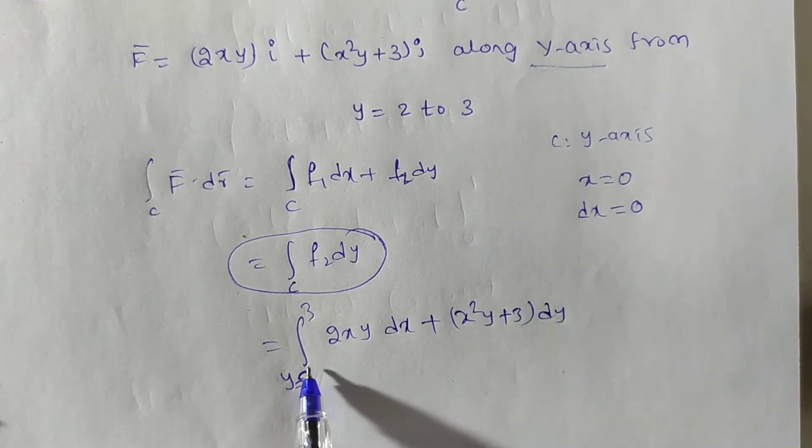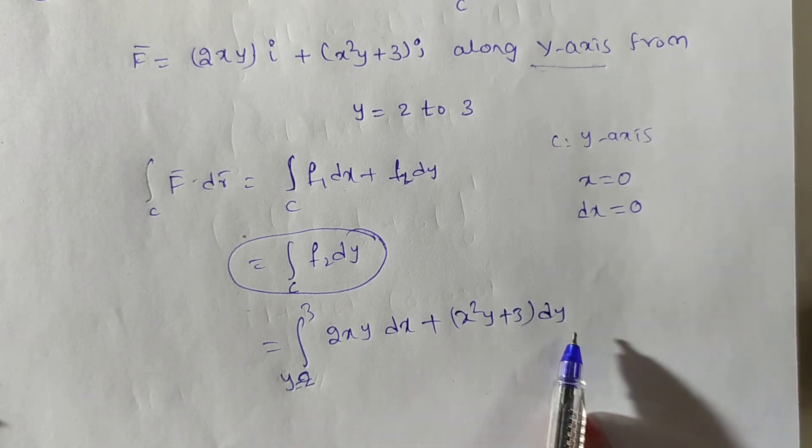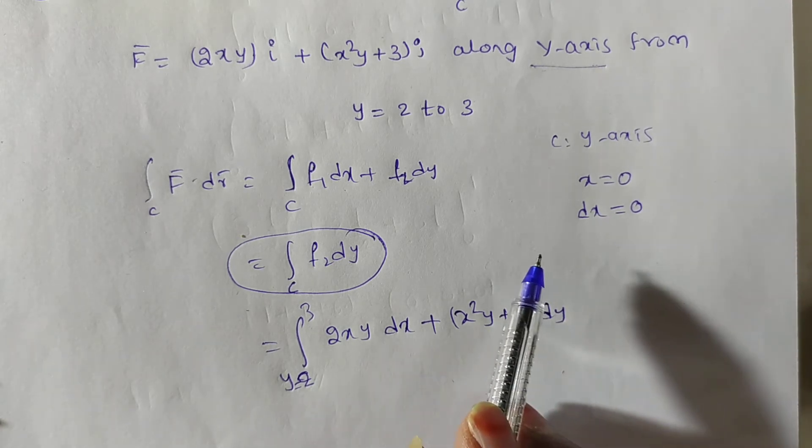Now we have to integrate this one, line integral only. With respect to one variable only we can do. But here you have dx and dy, so it is not easy. So in that case, what we have to do? What they are given a curve, we have to verify.